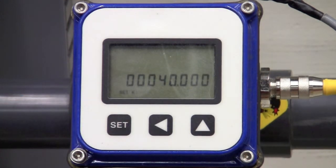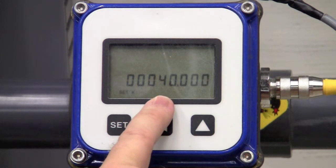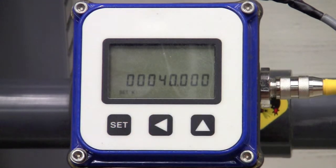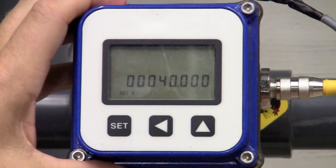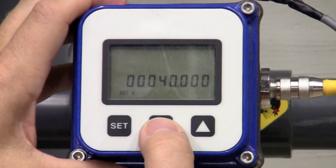Your first configuration parameter is your k-factor. Currently, I have 40.000 as the k-factor. The k-factor is the number of pulses per gallon. So, let's say I wanted to change that k-factor.